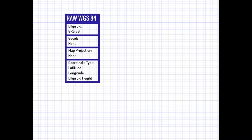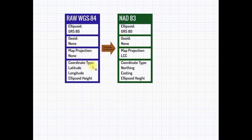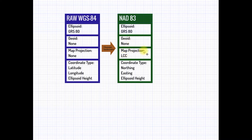The next step in this process is to move to what I call generic NAD83, and we do that with what's called a seven-parameter transformation. The elements of this generic NAD83 horizontal datum include the same ellipsoid — we're not changing the shape of the ellipsoid. We still haven't applied a geoid yet, but we do add a map projection at this step. State plane coordinates in California use what's called a Lambert conic conformal projection. After applying the seven-parameter transformation and the map projection, we get a northing and easting in feet, and the ellipsoid height remains unchanged.